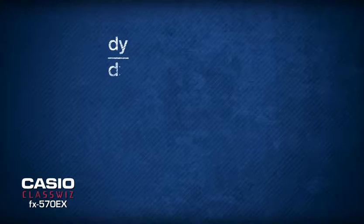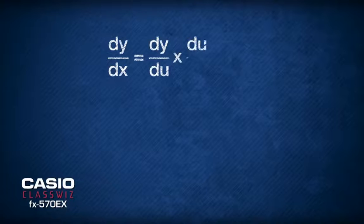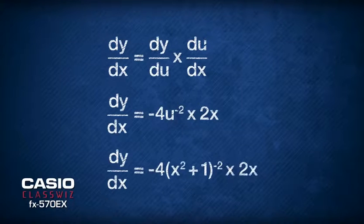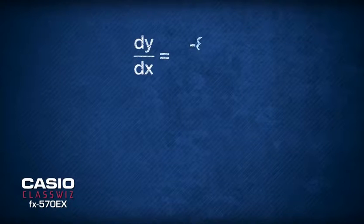Then, using the chain rule formula dy/dx equals dy/du times du/dx, we insert the two differentials and substitute u back in terms of x. We now have dy/dx equals negative 8x over the square of (x squared plus 1).